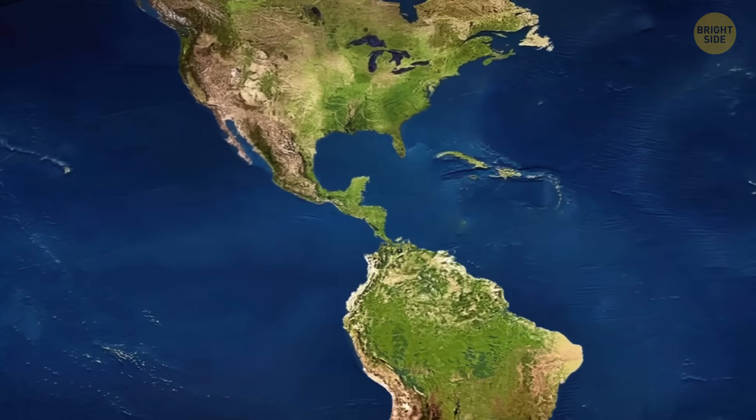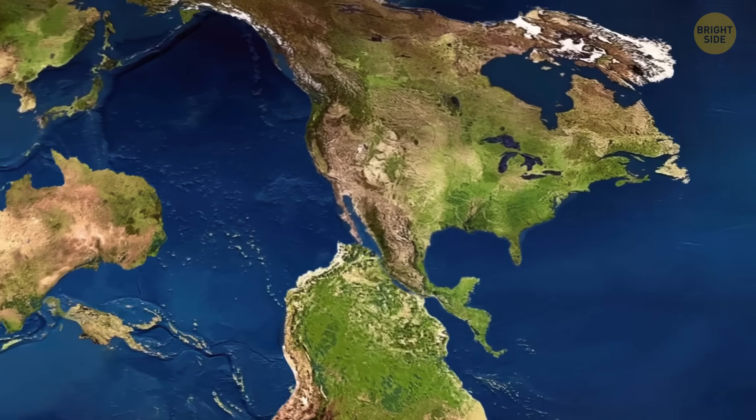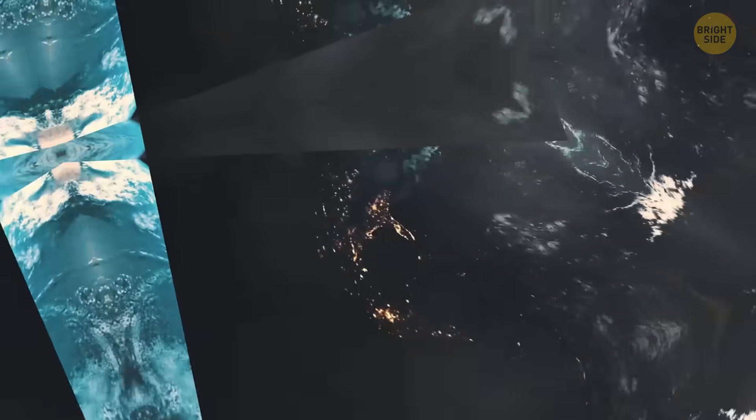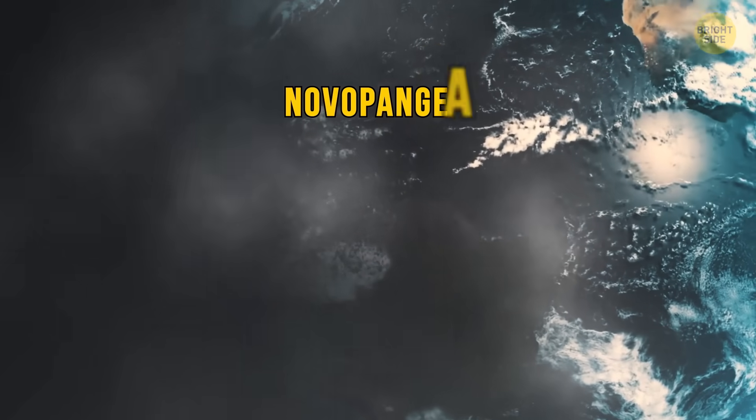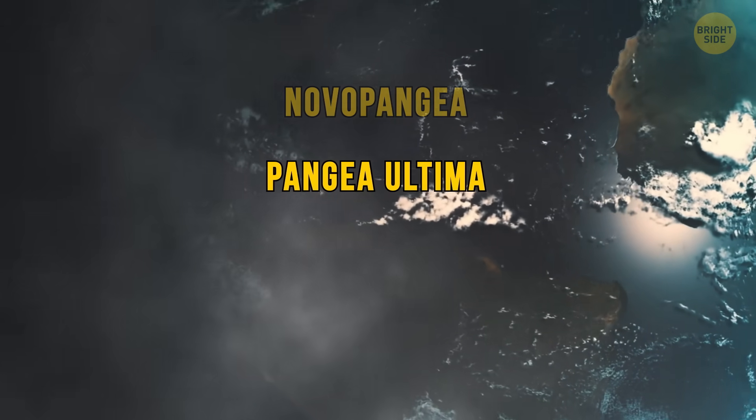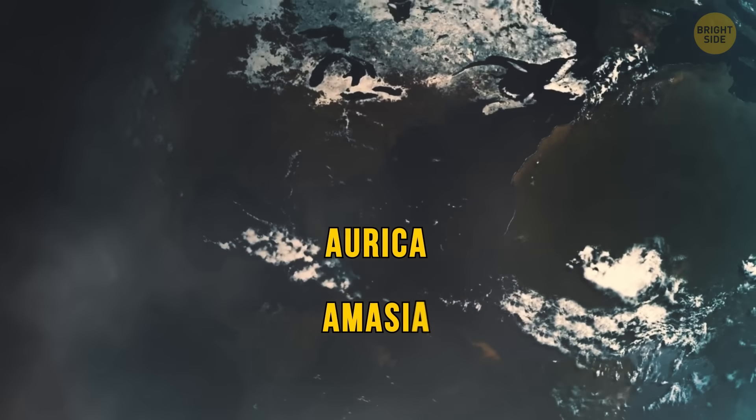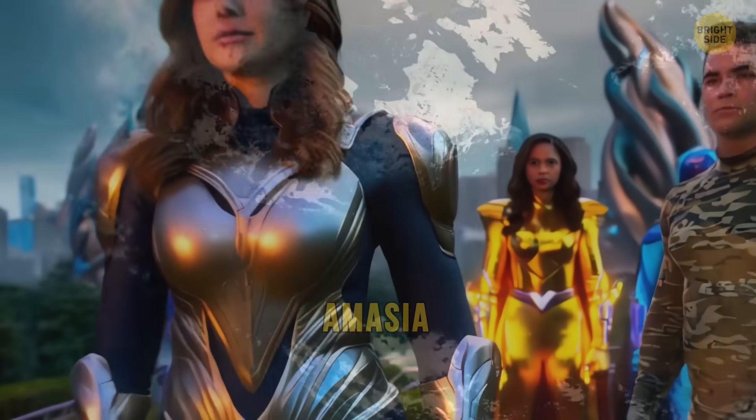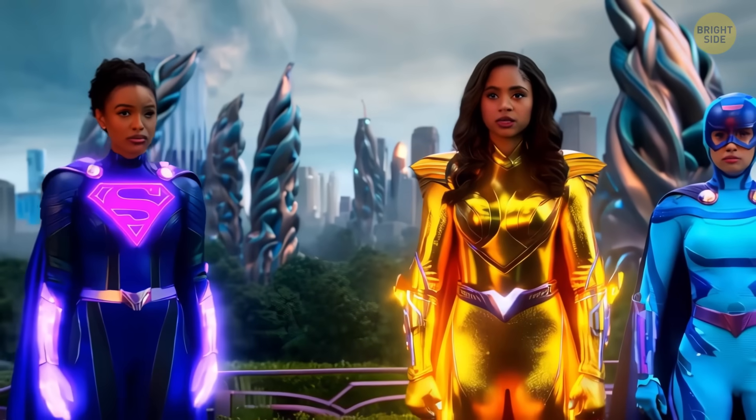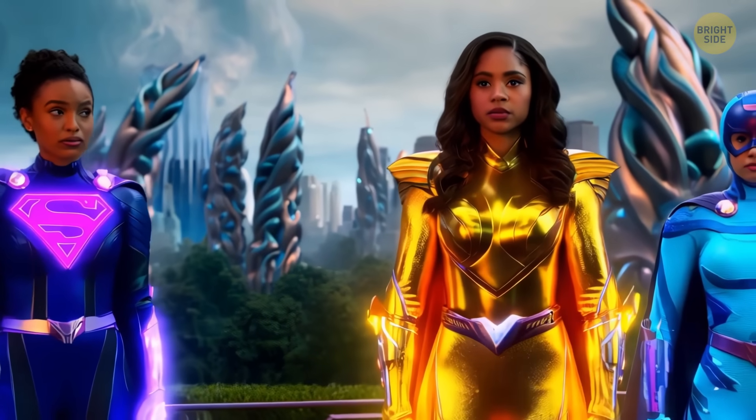So how will this next supercontinent come together? Well, there are four major possibilities: Novo Pangaea, Pangaea Ultima, Orica, and Amasia. These might sound like superhero names, but they're actually ways the puzzle pieces could fit. Let's look at them all.